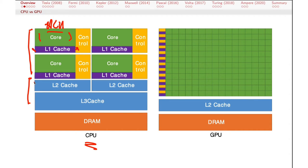There's level two cache shared in different ways in different architectures, and then level three cache that's usually shared across all of the cores. The processor chip ends there, and of course we have DRAM — the general memory on the motherboard. The point of the CPU architecture is to run a lot of different types of compute jobs very flexibly and with very low latency, hence all of the chip space devoted to cache.